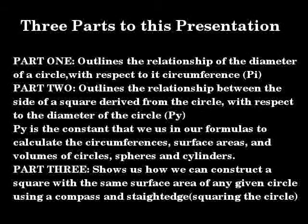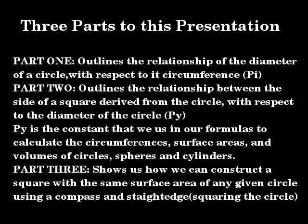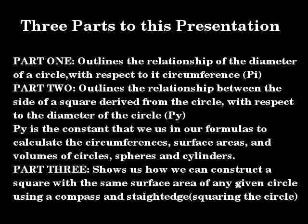Part 1 outlines the relationship of the diameter of a circle with respect to its circumference — Pi. Part 2 outlines the relationship between the side of a square derived from a circle with respect to the diameter of the circle — Pi. Pi is the constant that we use in our formulas to calculate the circumferences, surface areas, and volumes of circles, spheres, and cylinders.